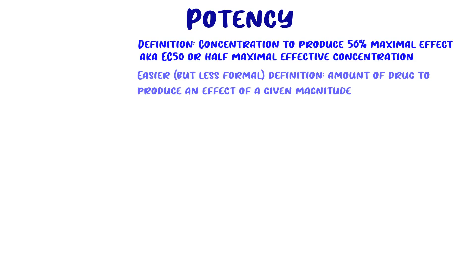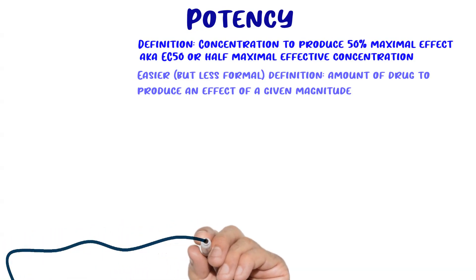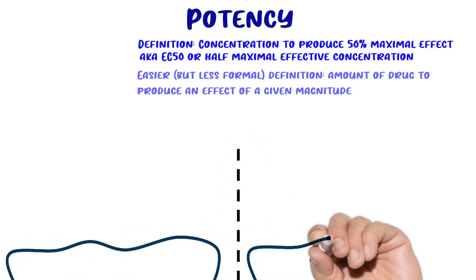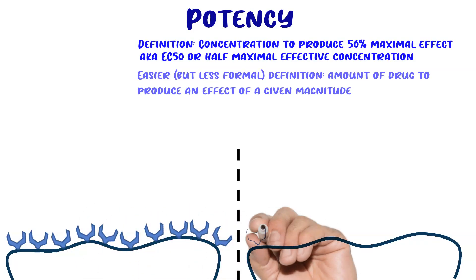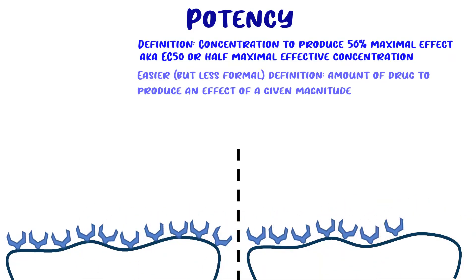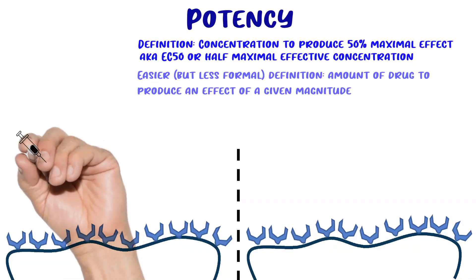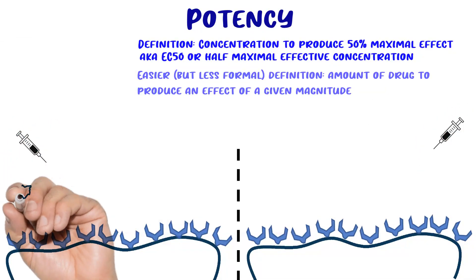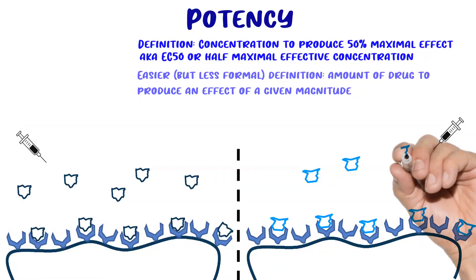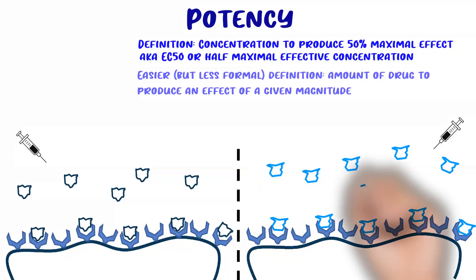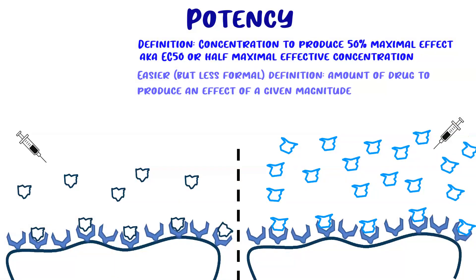To have a better grasp on what potency actually is and how it differs from efficacy, it's best to make a visual. I'm going to draw a super simplified version of two perfectly equal neurons — the exact same neurons, in the exact same conditions, with the same number of the same receptors. I'm going to inject one drug on the left and one drug on the right. Both these drugs are full agonists, meaning they have full efficacy of the system, and I'm giving both drugs at their half maximal effective concentration, the EC50.